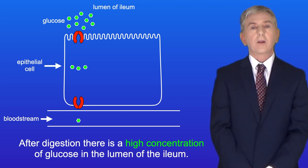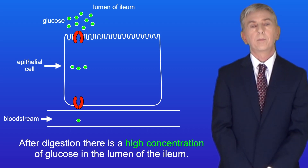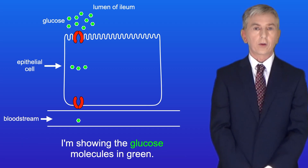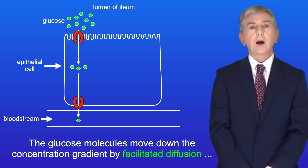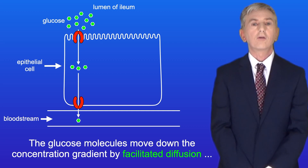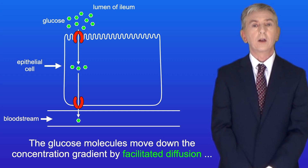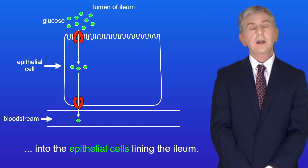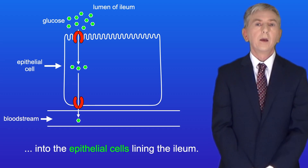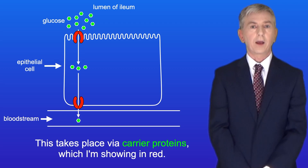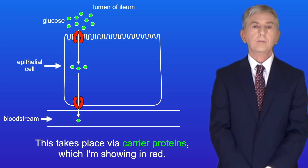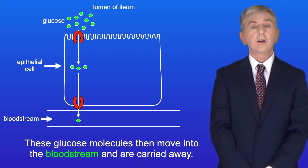After digestion there's a high concentration of glucose in the lumen of the ileum — I'm showing the glucose molecules in green. The glucose molecules move down the concentration gradient by facilitated diffusion into the epithelial cells lining the ileum. This takes place via carrier proteins, which I'm showing in red. These glucose molecules then move into the bloodstream and are carried away.